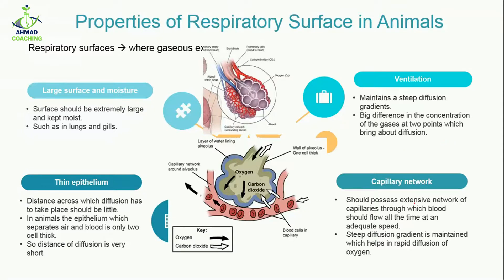The last property of respiratory surfaces in animals is the capillary network. The surface should possess an extensive network of capillaries through which blood flows at an adequate speed. Here you can see that in the lungs, the alveoli are covered by blood vessels in which blood flows slowly, allowing gaseous exchange to take place. The steep diffusion gradient is maintained, helping rapid diffusion of oxygen, since oxygen is at high concentration in inhaled air and carbon dioxide is at high concentration in the blood.